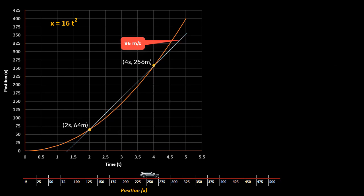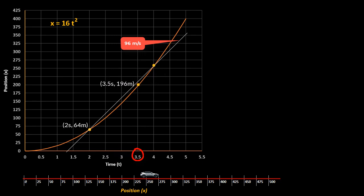If you are asked what is the average velocity between t = 2 seconds and t = 3.5 seconds — that is, a reduced time interval — you can again connect the two points by a straight line and find its slope, which gives you the average velocity between these two points. So v average = delta s upon delta t = 132 meters upon 1.5 seconds, which equals 88 meters per second.